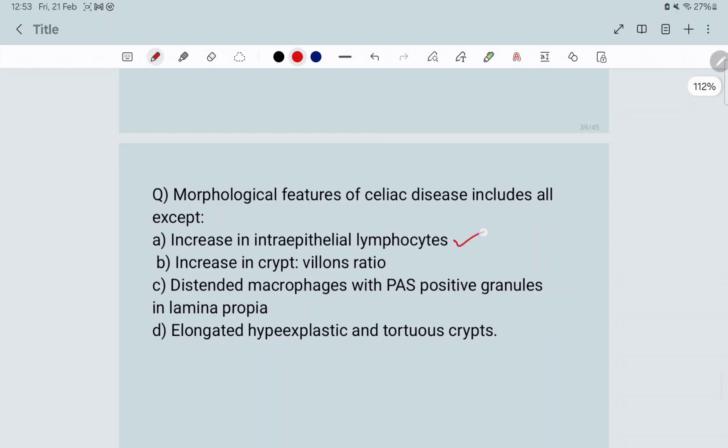Yes, there is increased intraepithelial lymphocytes. Yes, increased crypt to villus ratio, definitely. Crypt hyperplasia occurs and villus atrophies occur. Hyperplasia and tortuous crypts, yes.